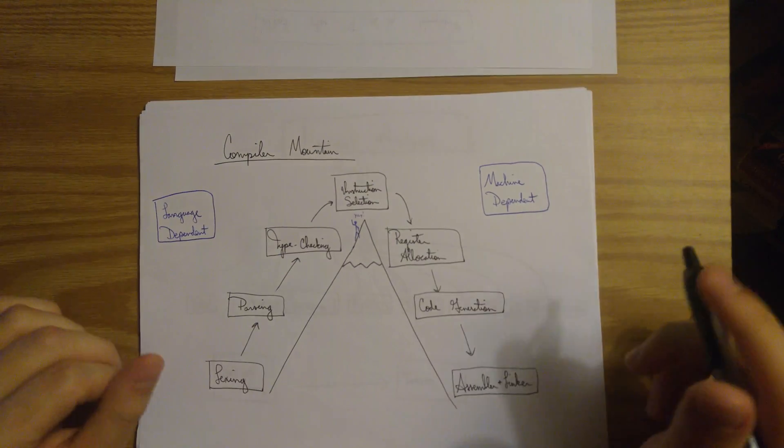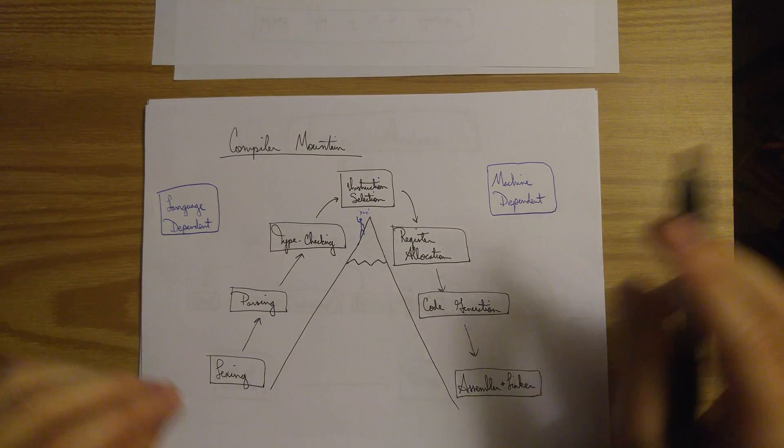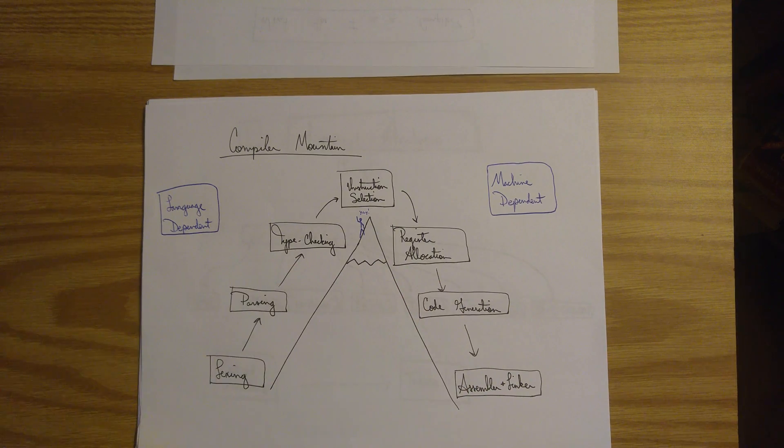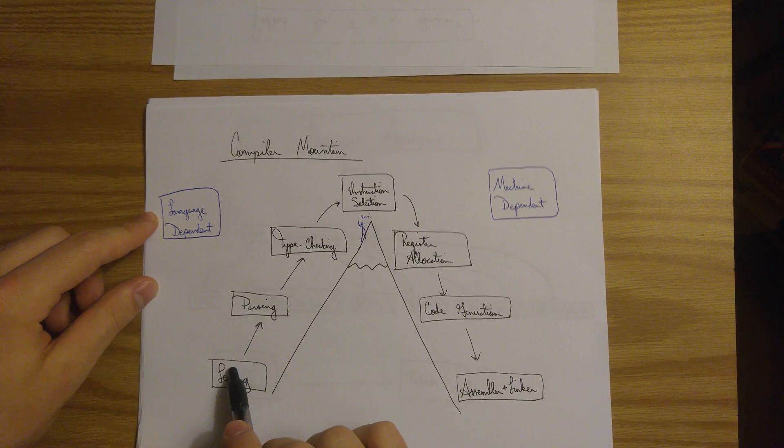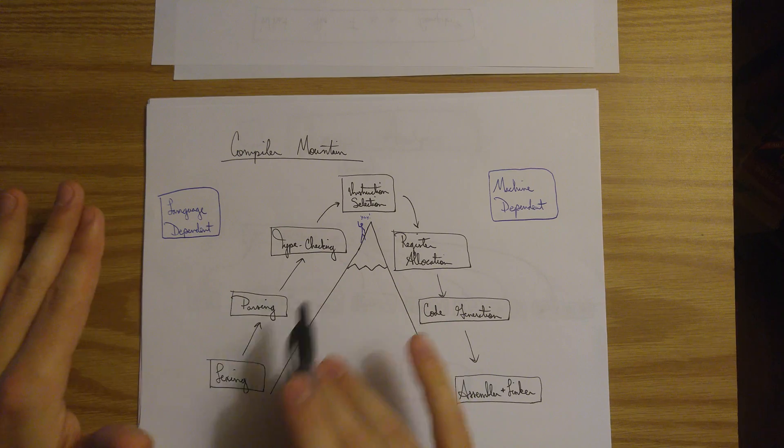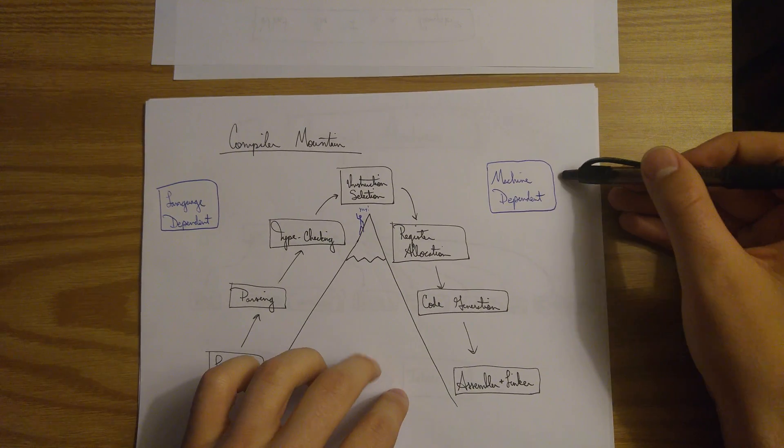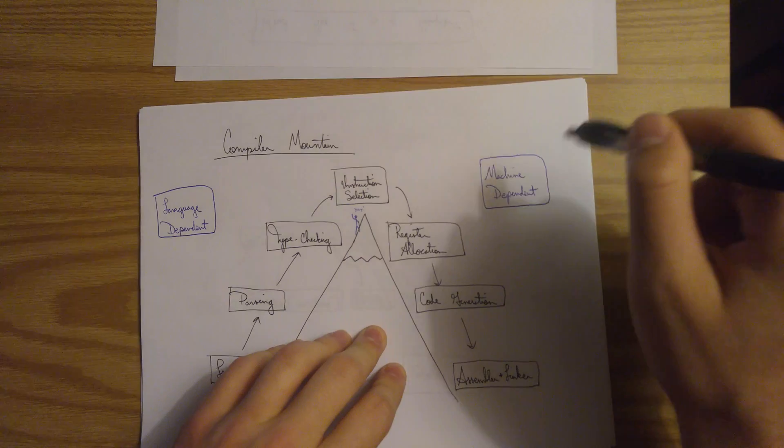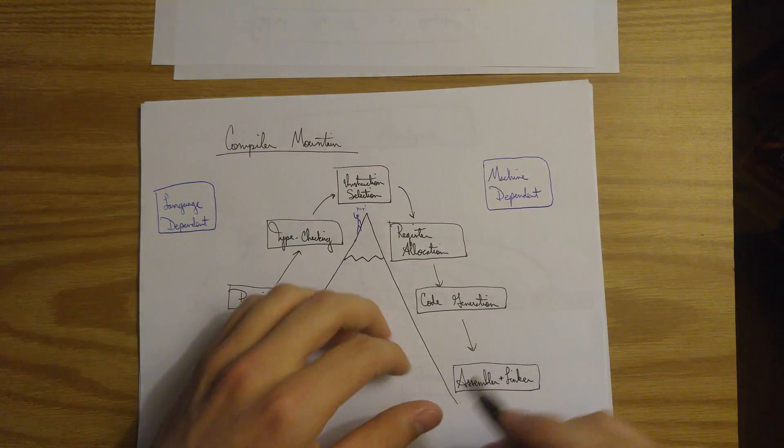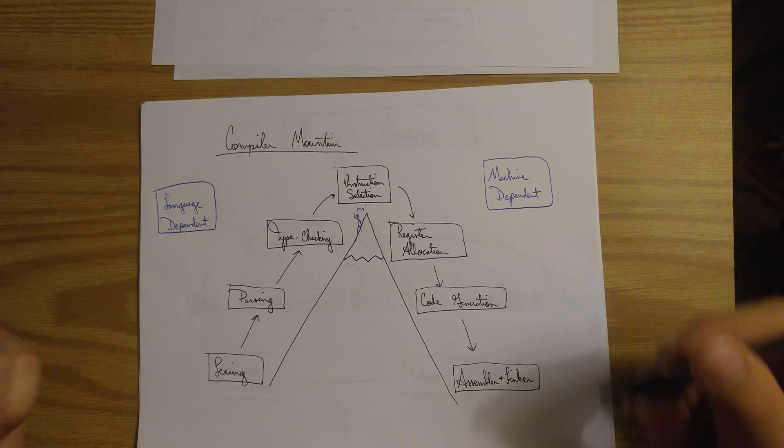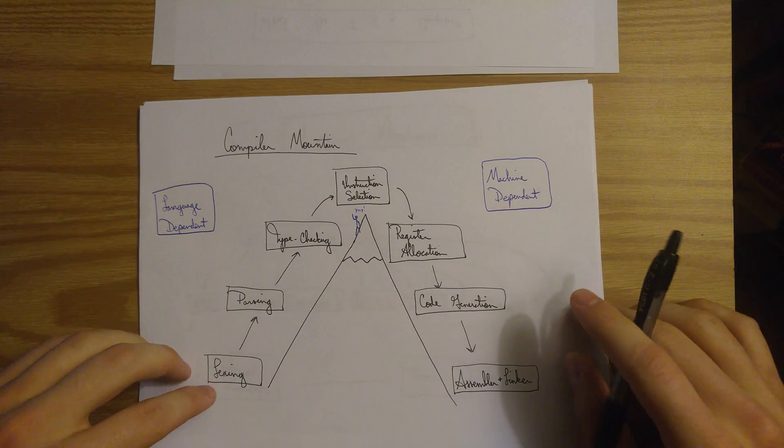So here's a high level representation of how compilers really work. The stages on the left hand side are dependent on the language that you're compiling into. So syntax rules and things like that are determined over here. Machine dependent stages are over on the right hand side. So this deals with things like register allocation, how many registers a machine actually has, how memory is laid out, all of those problems.